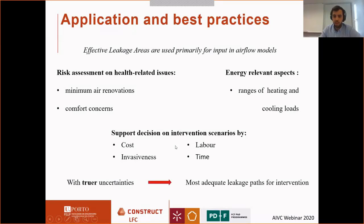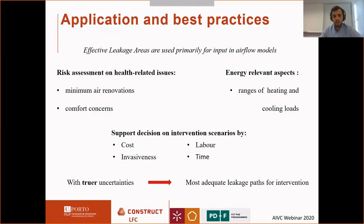With truer uncertainties, we can identify the most adequate leakage paths for intervention — it doesn't need to be the most impactful one. Normally you could intervene on a larger number of easier-access leakage paths that represent less individual impact, but you could be less invasive and still achieve better results in the end. Thank you for your attention.